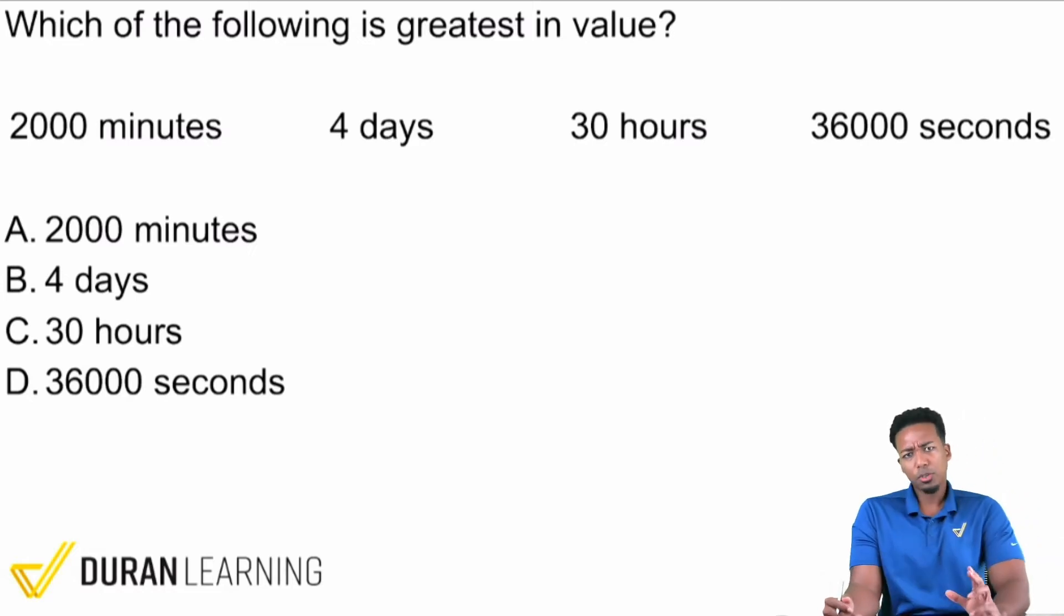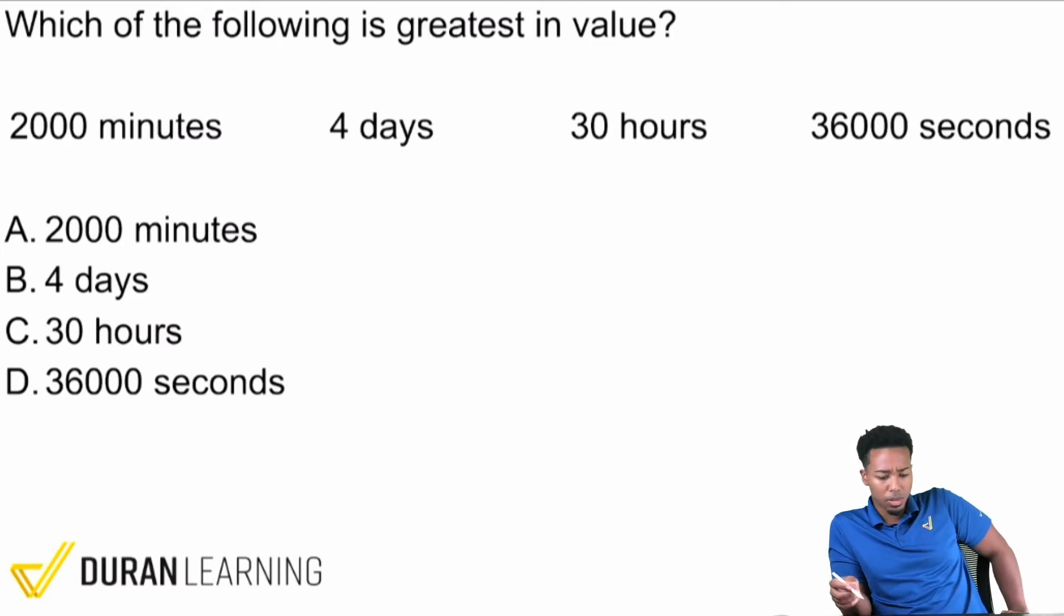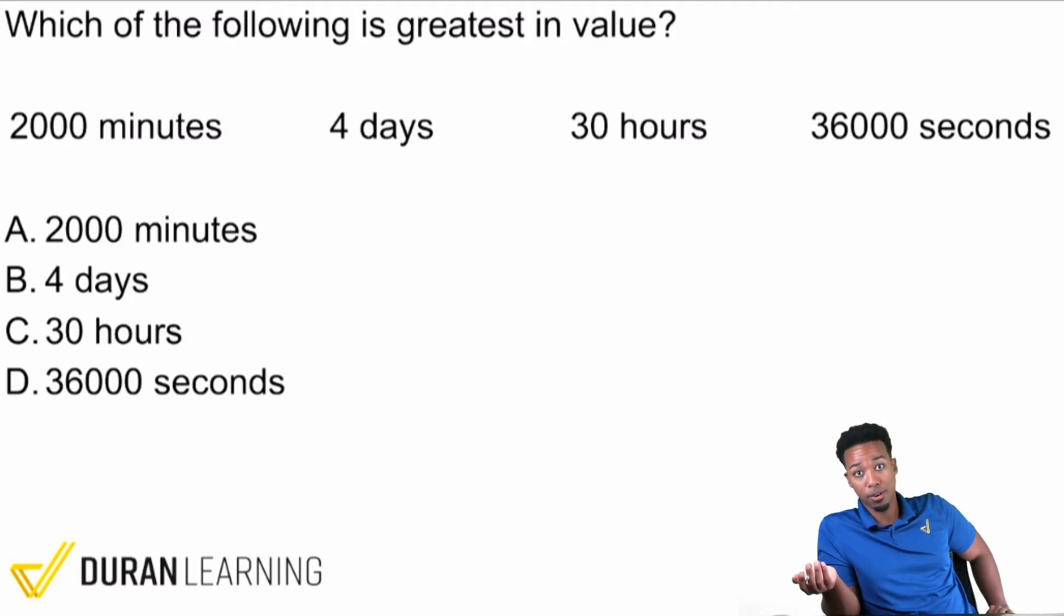Let's try to be strategic here because we're trying to pick the biggest value. We're not trying to pick the biggest number - if we're just picking the biggest number it's gonna be 36,000 seconds. We're looking for the biggest value. These are all in different units, so we're gonna have to turn these all into the same units to understand and be able to clearly see which one's actually bigger.